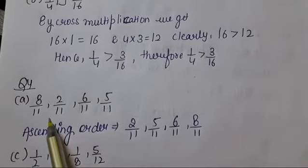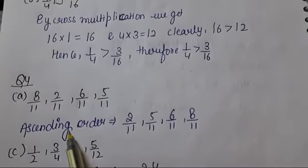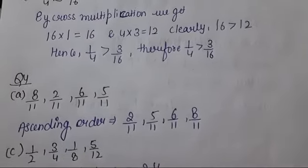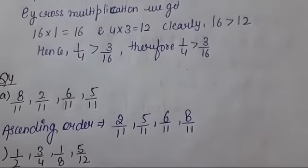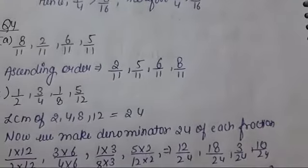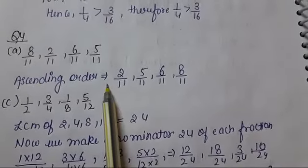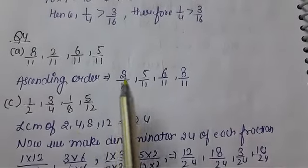8 upon 11, 2 upon 11, 6 upon 11, and 5 upon 11. Now we will arrange in ascending order: 2 upon 11, 5 upon 11, 6 upon 11, and 8 upon 11. When all denominators are the same, we arrange them like this.